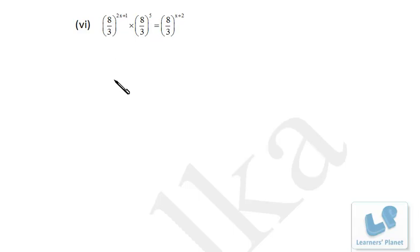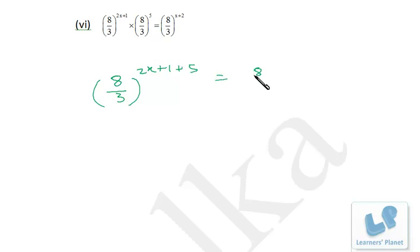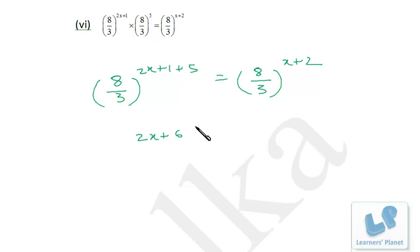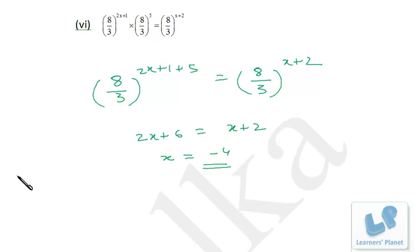Now over here it's 8/3, and there's a product sign between these two, so the powers will be added. So 2x plus 1 plus 5 equals 8/3 raised to x plus 2. Now base is same, so powers will be equal. So 2x plus 6 equals x plus 2. Solving: 2x minus x equals 2 minus 6, that is x equals minus 4.